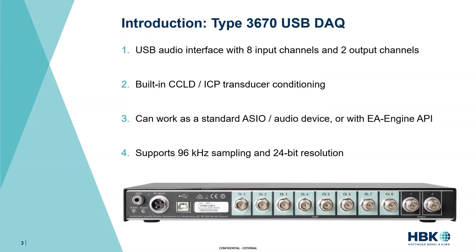The Type 3670 USB data acquisition system is a USB audio interface with eight input channels and two output channels. It has built-in CCLD and ICP transducer conditioning, meaning you don't need any external conditioning boxes to use their transducers, which is really convenient if you just want to hook up and go. It works as either a standard ASIO or USB audio device, or with the EA Engine API as demonstrated today, and it supports 96 kHz sampling rate at 24-bit resolution — really high quality analysis level files.